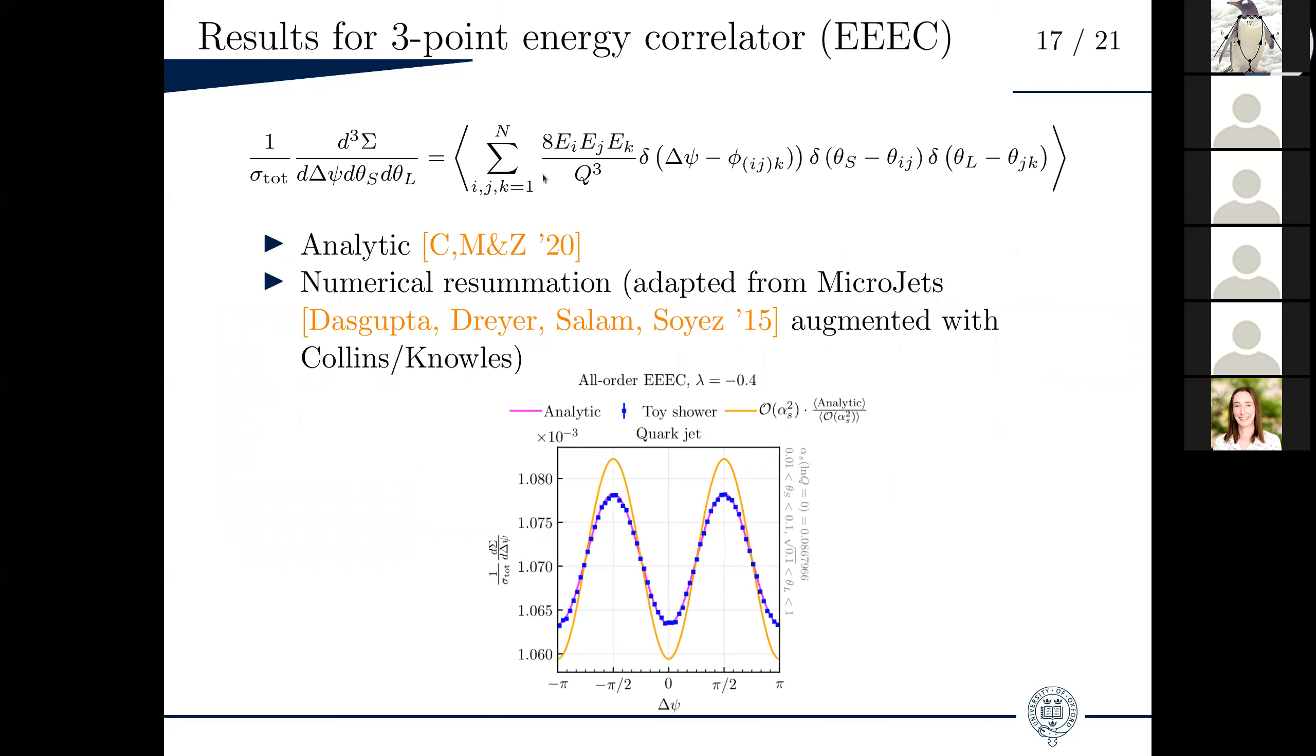This observable is given here and it's not quite important to understand how it's defined. What is important is that it is sensitive to spin correlations. Here you see the result of a resummation. The magenta curve is the analytic resummation by Chen, Moult, and Zhu. The blue points are our own numerical resummation, which we call the toy shower. You see exactly this one plus a factor cosine two phi dependence here. You also see that our toy shower agrees perfectly with the analytic results, which was a way of validating our toy shower.